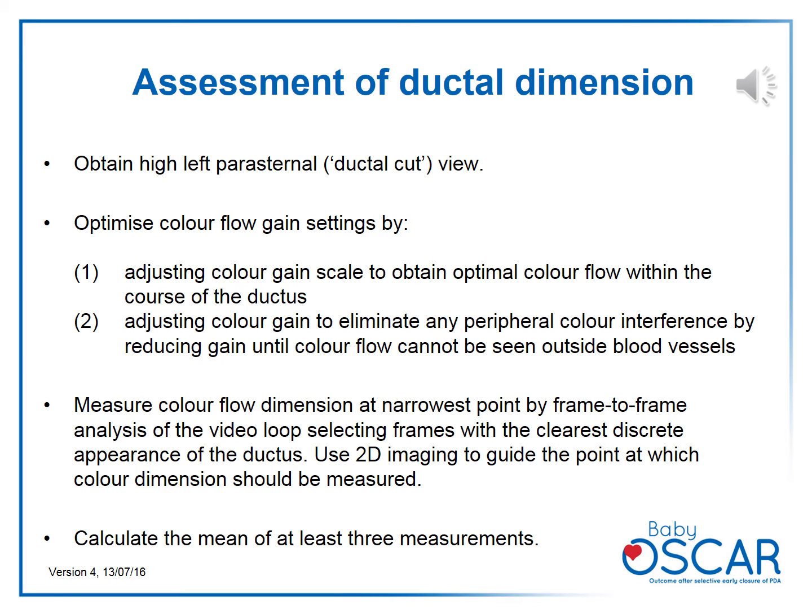For assessment of ductal dimension, obtain a high left parasternal or ductal cut view, optimize your color flow gain as explained, and measure the color flow dimension at the narrowest point by frame-to-frame analysis of the video loop, selecting frames with the clearest discrete appearance of the ductus. You can use 2D imaging to guide the measurement point. For trial entry, perform at least three measurements and take an average of the three for entry into the case report form and to confirm inclusion criteria for the Baby Oscar trial.